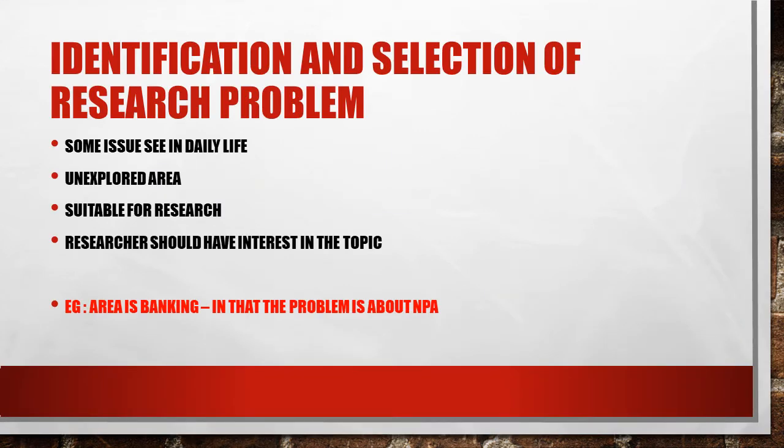The first step in a research process is identification and selection of a research problem. A research problem can be got from several sources: it can be from one's own interest, some daily issue or daily problem, technological changes happening around the world, recent trends or current affairs, unexplored areas which have not been studied earlier, or an idea from discussions with experts or a research guide.